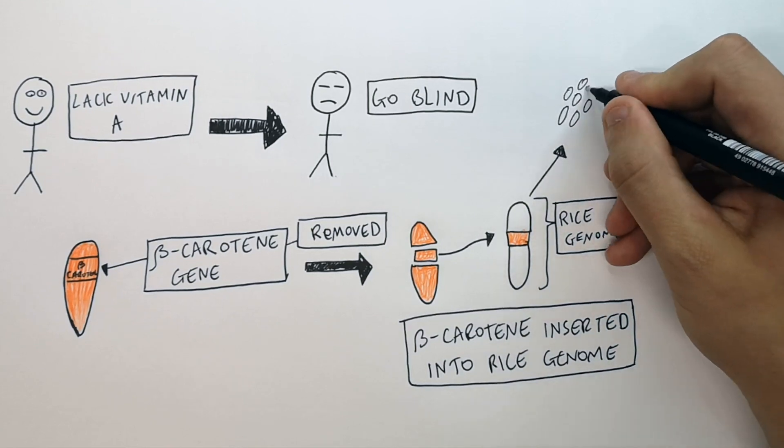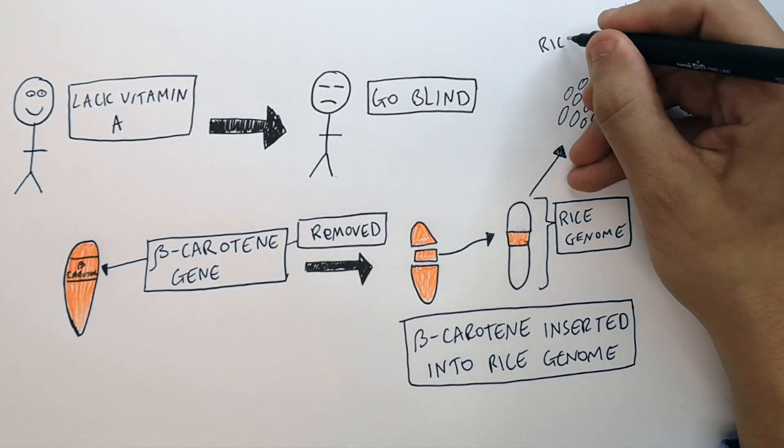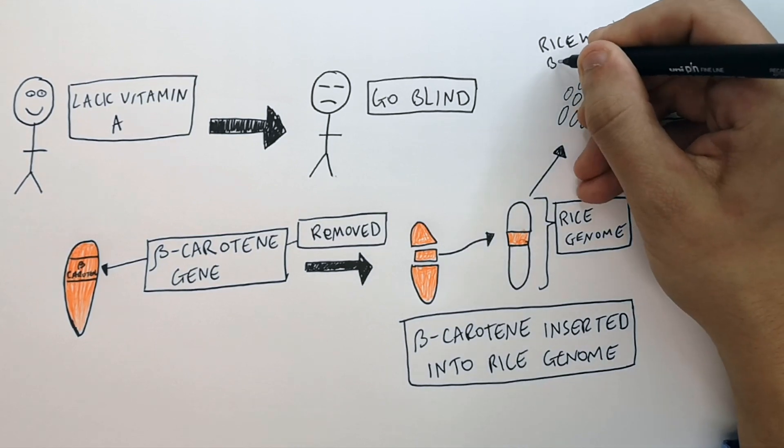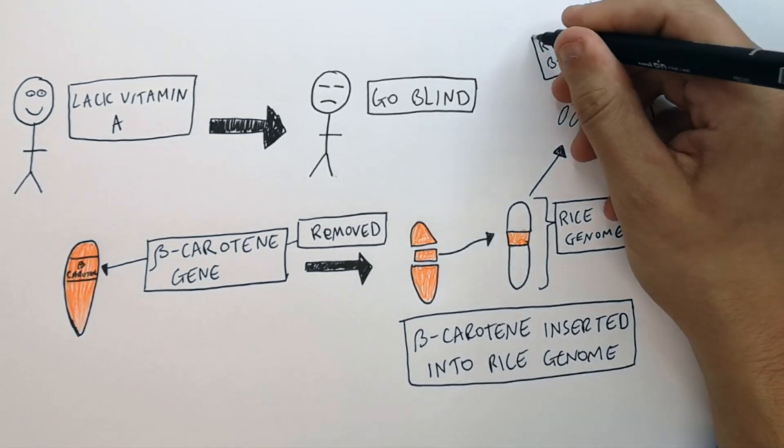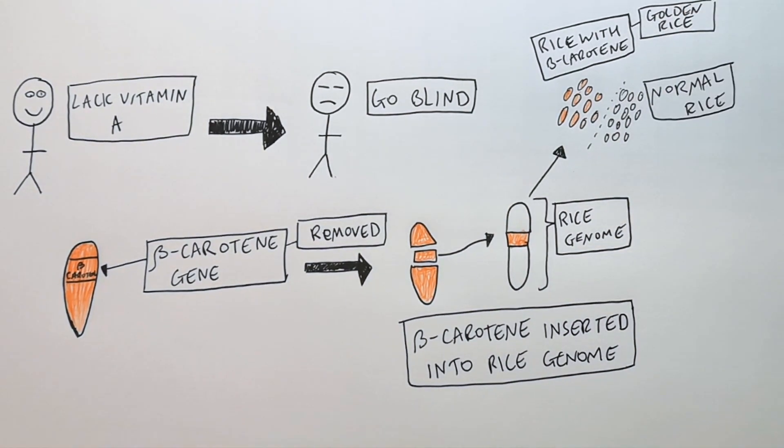So you've now got these two varieties of rice: normal rice and golden rice. This rice with the beta-carotene gene we call golden rice, and it literally looks golden in color.